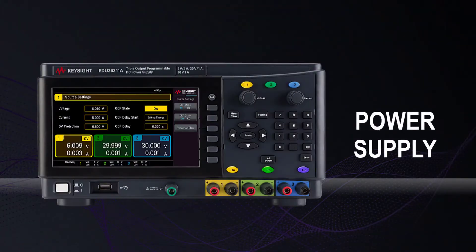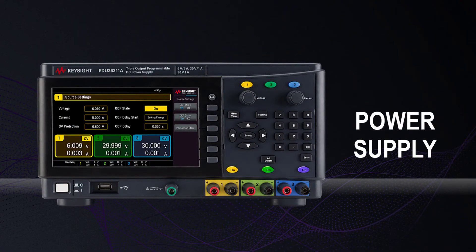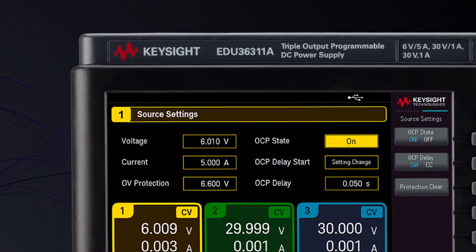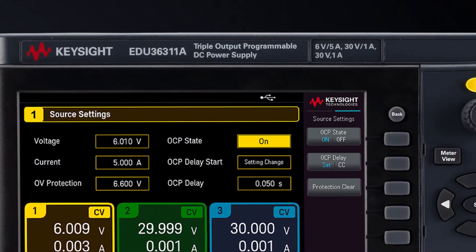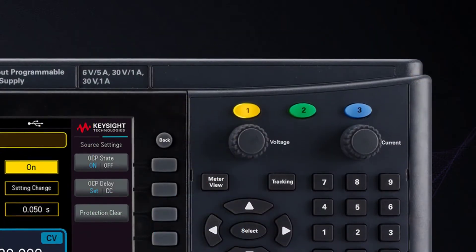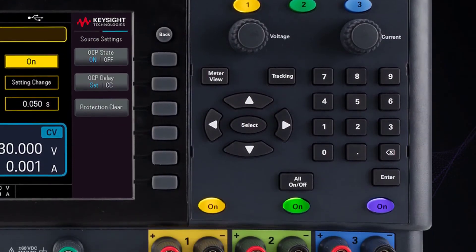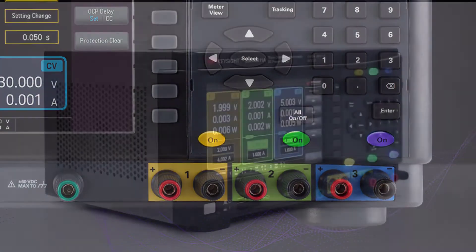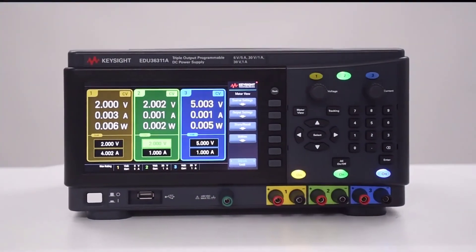The triple output DC bench power supply is ready for your next design with its 90-watt electrically isolated channels that supply clean and reliable power. You can independently turn the outputs on or off to give you 3 power supplies in one.